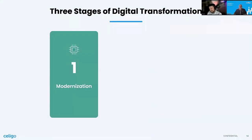The first step is modernization — simplifying and digitizing your existing processes and functions. You're not taking the bad ones and just making them faster, but being managed in scope, identifying where you can make improvements, and getting that throughout the business.